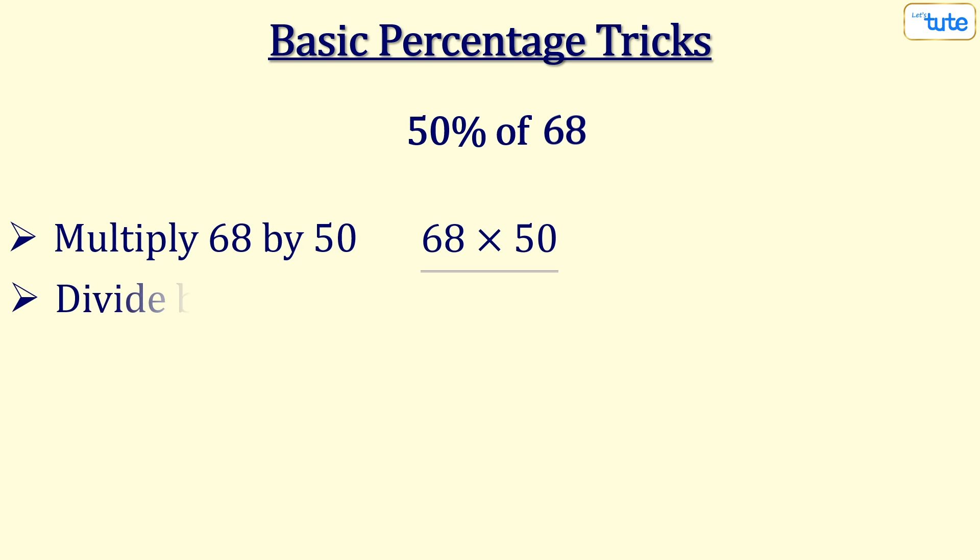Consider a number, say 68. Now, if we want to find 50 percent of 68, then we'll multiply 68 by 50 and divide by 100. Solving this, we get 34.